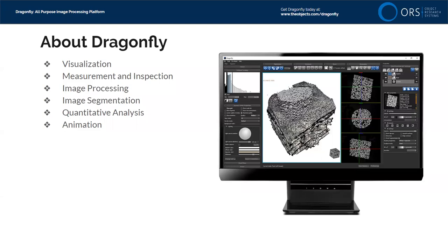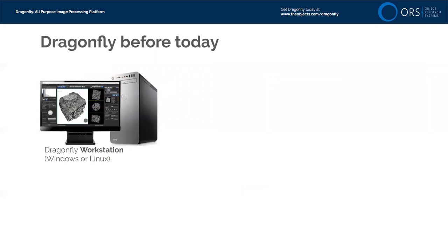If you want to learn how to use Dragonfly, there are many tutorials online, and of course we'll start that tutorial series next week. So where do you run Dragonfly is really what today's discussion is about. Before today, everyone who's run Dragonfly installs it on a desktop computer — a Windows or Linux workstation. You use your mouse and keyboard connected to that workstation to control and process your data. That's how you run Dragonfly.